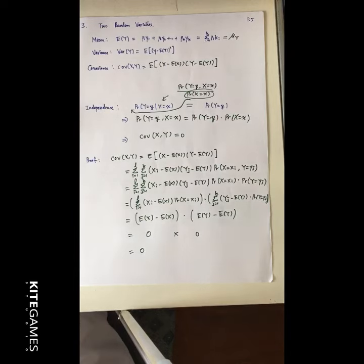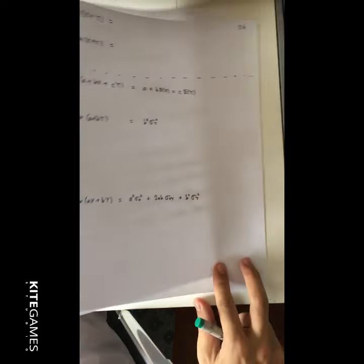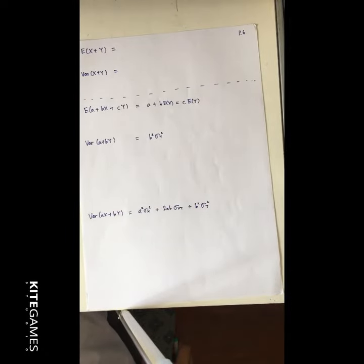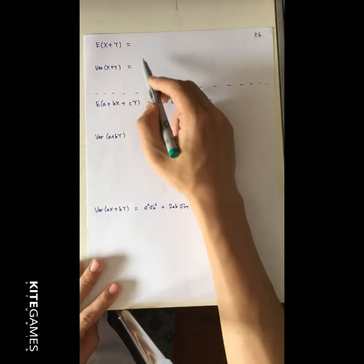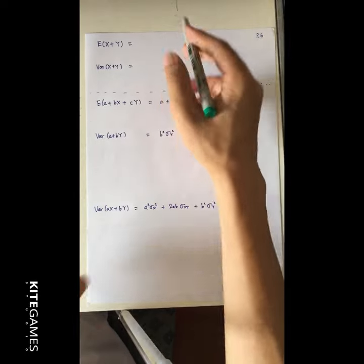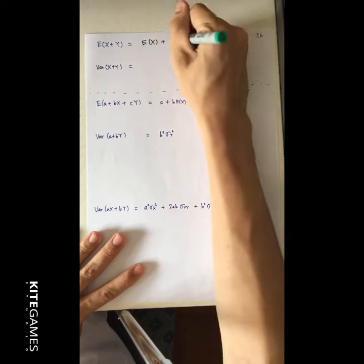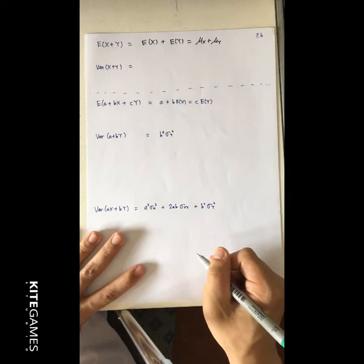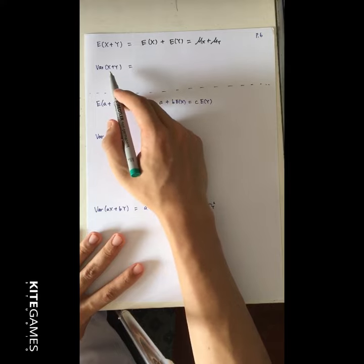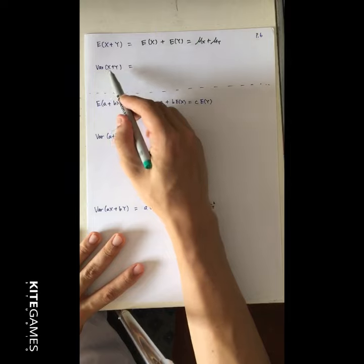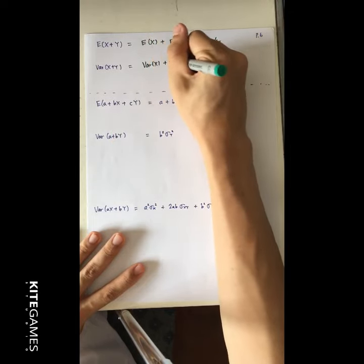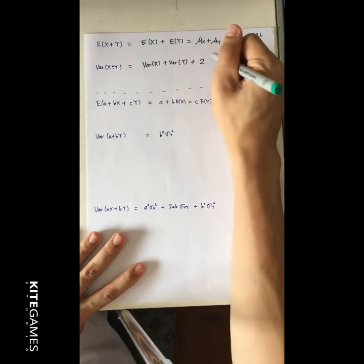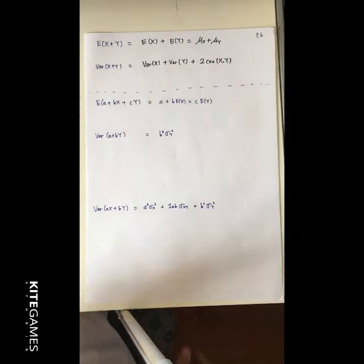Next we go to the two random variable cases. You need to know a set of relations between two random variables and how to derive them. At the simplest level: the expected value of (x plus y) equals E[x] plus E[y], which we can write as mu_x plus mu_y. For variance, the variance of (x plus y) is not simply Var(x) plus Var(y). You need to add another term: 2 times the covariance of x and y.